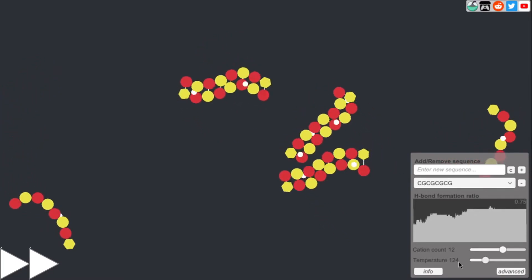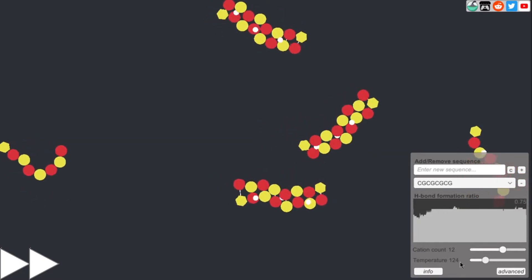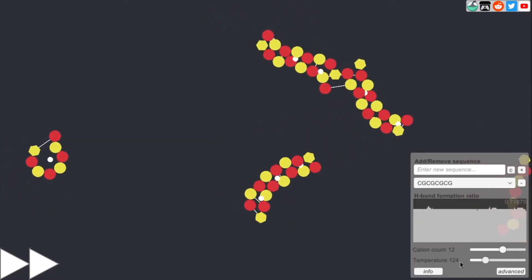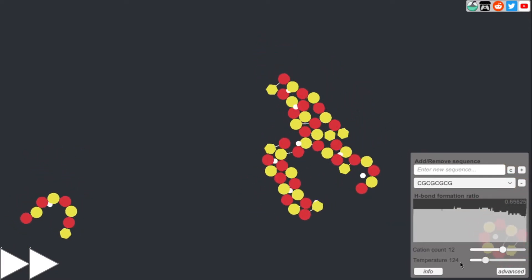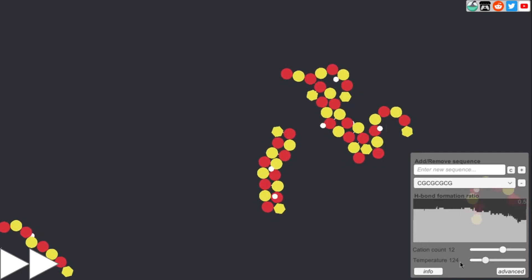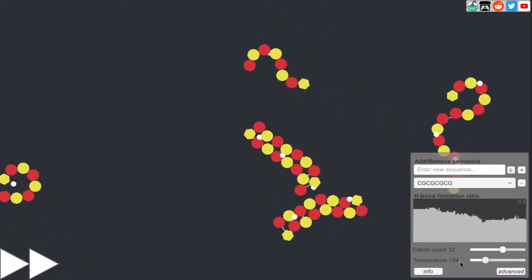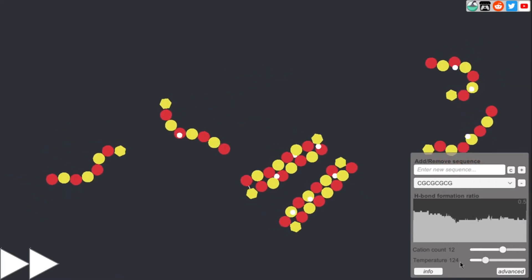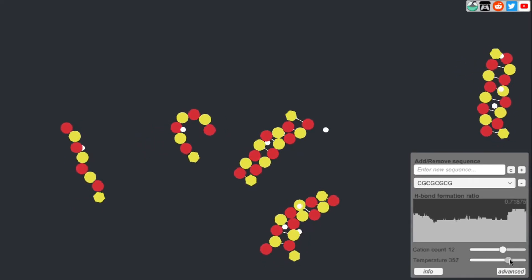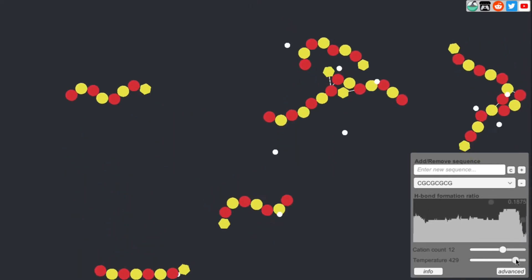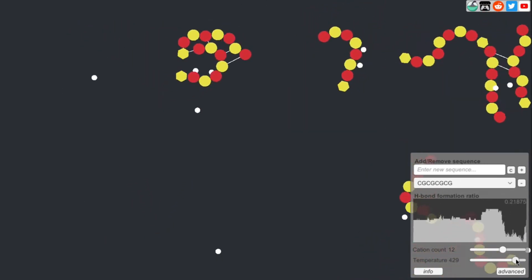I also would like to note that if we decrease the temperature too low, then we wouldn't be able to see the formation of the duplexes. This is something we also see in the laboratory. If you were to put melted DNA into ice, then they don't tend to form duplexes. Here I'll show you. We'll increase the temperature and have them melt again. And they're pretty much separated.